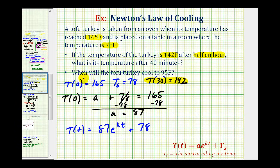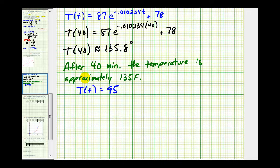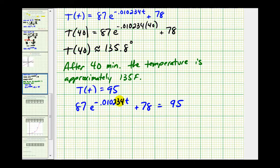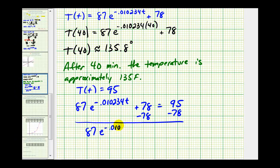Now for the second question, we want to know when the tofu turkey will cool to 95 degrees Fahrenheit, which means we want to know when T of t is equal to 95. So we want to solve the equation: 87 times e to the power of negative 0.010234 t plus 78 equals 95. We'll isolate the exponential part by subtracting 78 on both sides, which gives us 87 times e to the power of negative 0.010234 t equals 17.